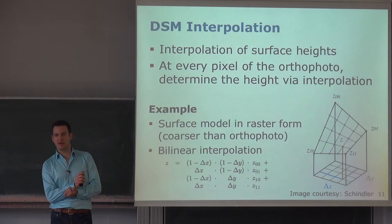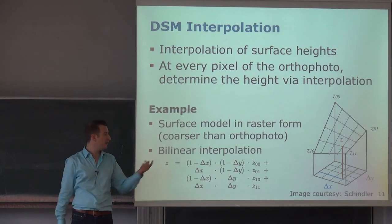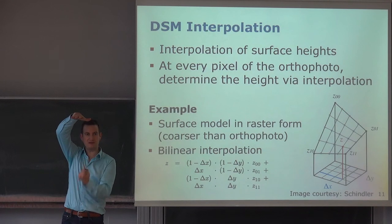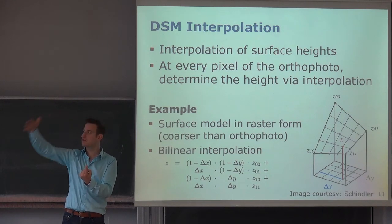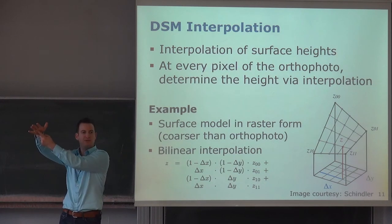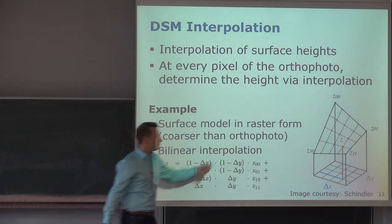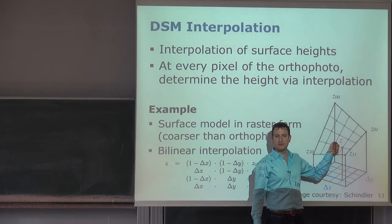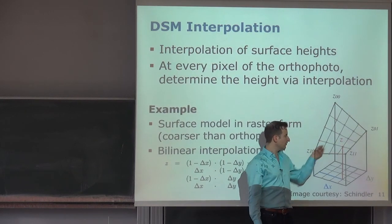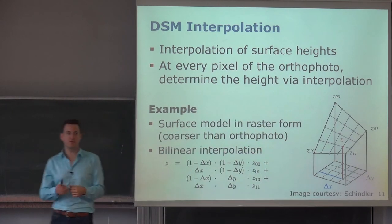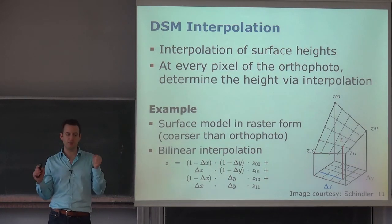The impact of Z errors depends on the camera's viewing angle. If the camera is directly above the surface, a wrong Z estimate is not critical. But if the image was taken from the side, a difference in Z has a big impact because we map to the wrong pixel and collect the wrong intensity value. The error depends on the coarseness of the 3D information and the camera location.